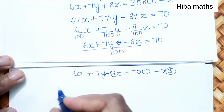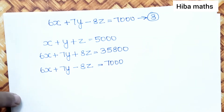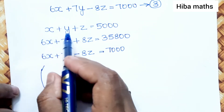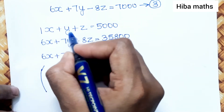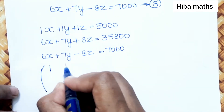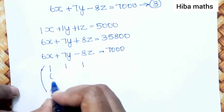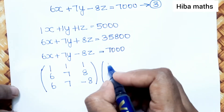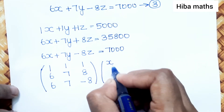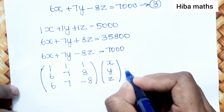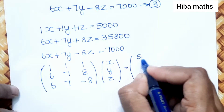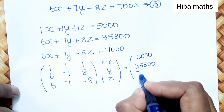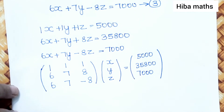Now we have three equations. We will use the matrix method. The coefficient matrix A has rows: [1, 1, 1], [6, 7, 8], [6, 7, -8]. The unknown matrix X is [x, y, z]. The resultant matrix B is [5000, 35800, 7000]. So the system is AX equals B.